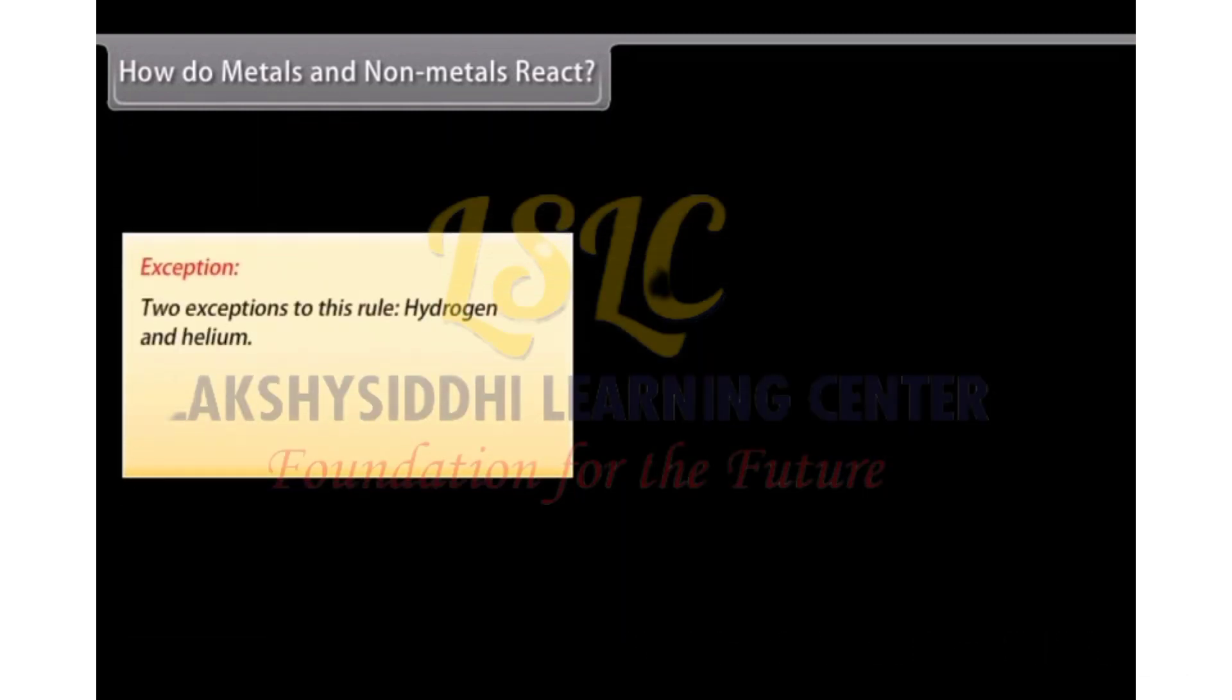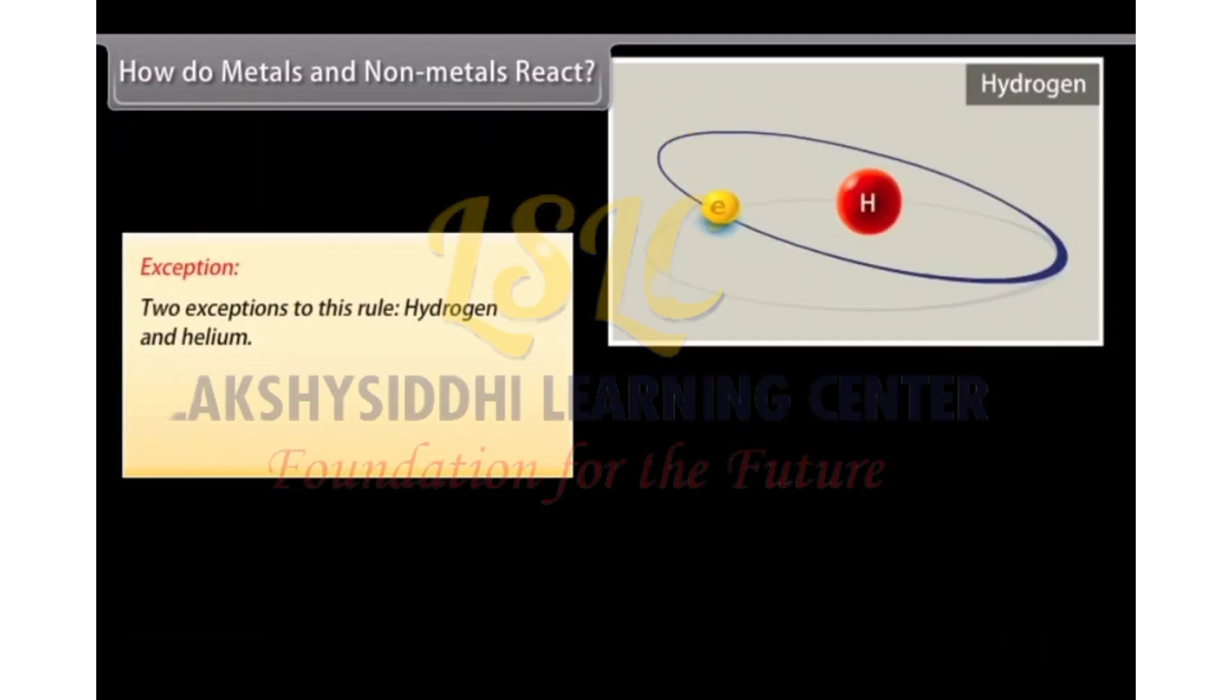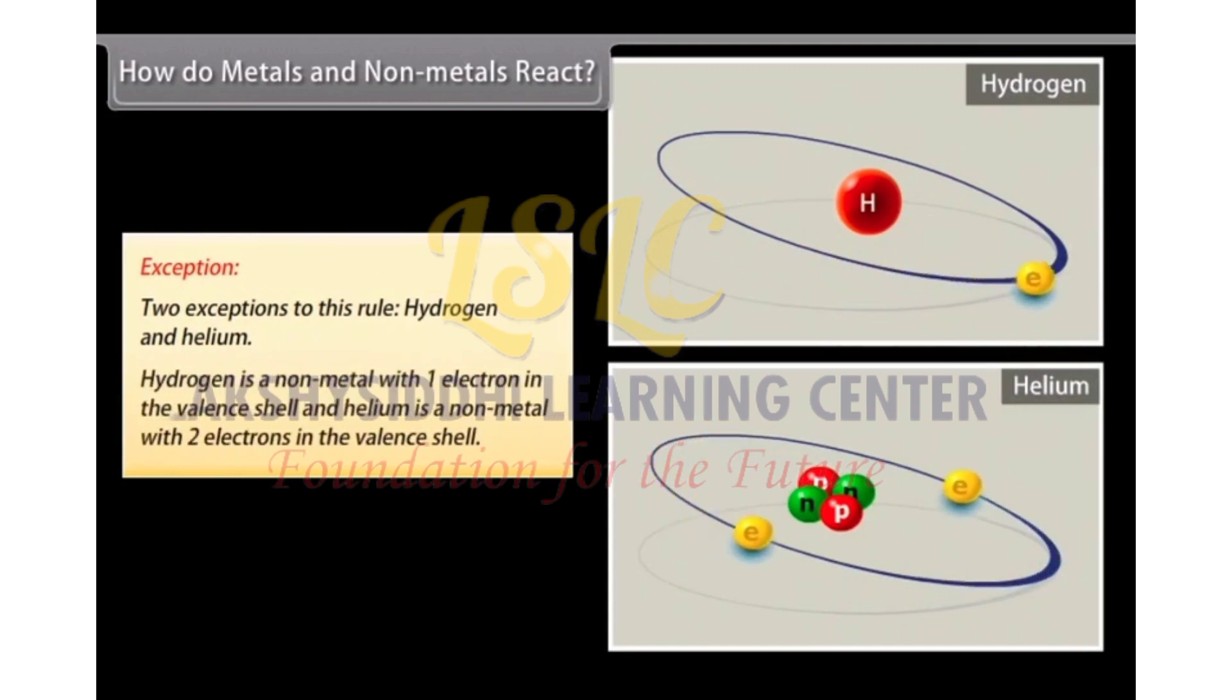Exception: Two exceptions to this rule, hydrogen and helium. Metals that donate electrons gain positive charge equal to the number of electrons donated, and non-metals gain electrons and negative charge equal to the number of electrons accepted.